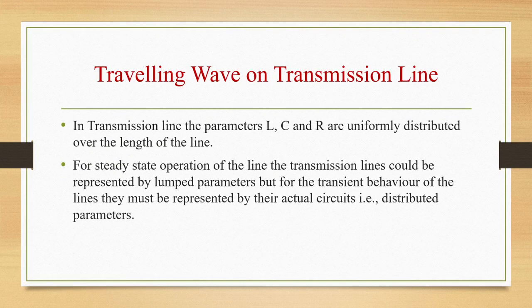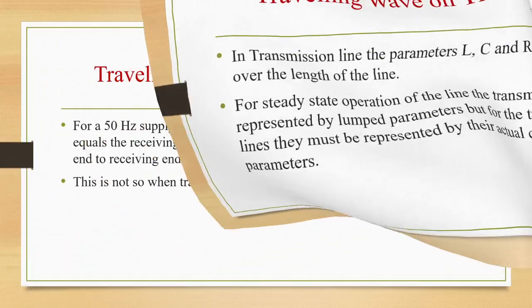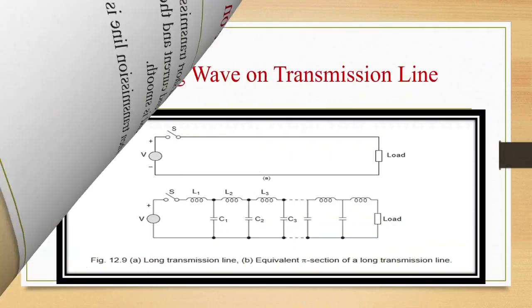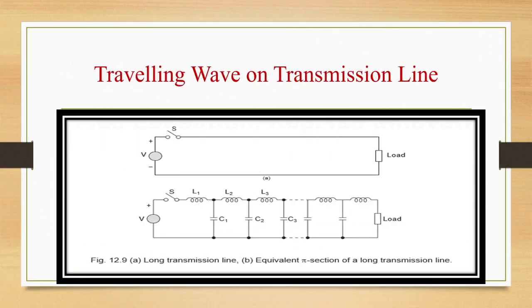In a transmission line, parameters L, C, and R are uniformly distributed over the length. For steady state operation they can be represented as lumped parameters, but for transient behavior they must be represented by distributed parameters. For a 50 Hz supply and short transmission line, sending end current equals receiving end current and the change in voltage from sending end to receiving end is smooth. This is not so when the transmission line is subjected to a transient.